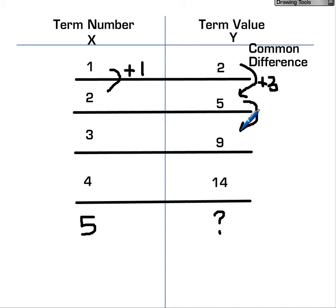Is there the same common difference between the term value for term number 2 and term number 3? 5 becomes 9. The common difference is not common, after all. It's not common, so we can't quite call that the common difference. However, we can call it a difference or a change over time.